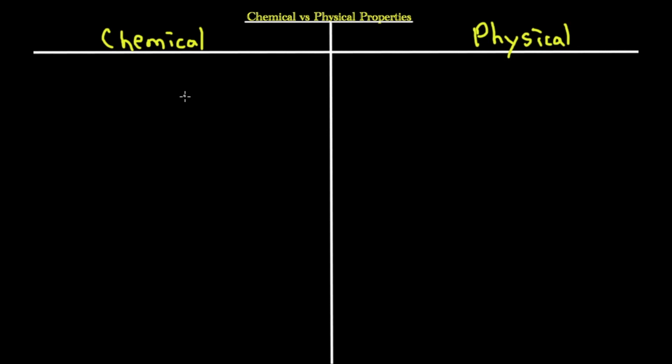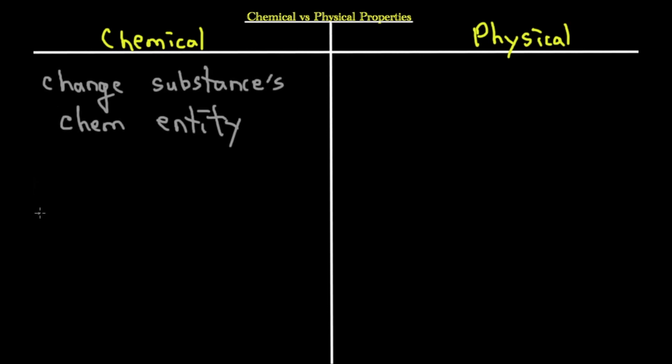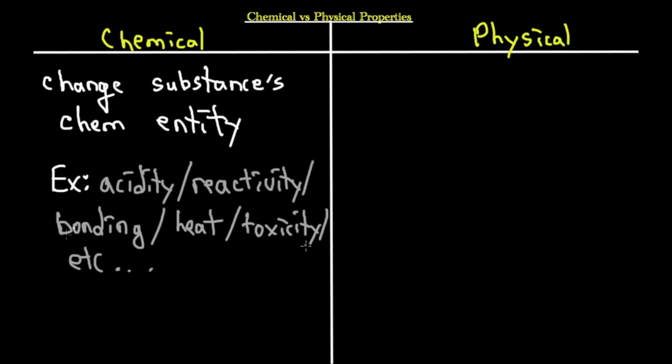Before jumping into the chemical and physical properties of each group, we first need to know what they are and what distinguishes them. Chemical properties are properties that change the substance's chemical entity — examples include acidity, reactivity, flammability, bonding, heat, toxicity, and oxidation. Physical properties, on the other hand, are properties that do not change the substance's chemical entity.